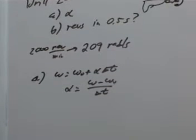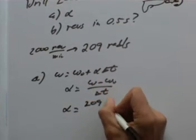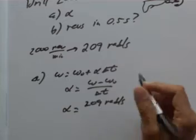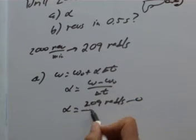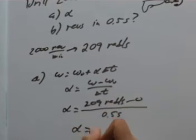Now I'm free to plug in some of the numbers that I know. The omega that it ended up with was not the 2,000. I'm going to work with the 209 radians per second, and the omega naught is zero because the drill started at rest, and it does this whole thing in 0.5 seconds. So there's your first answer right there.